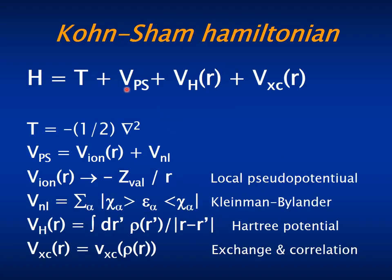In the pseudo-potential approximation used by SIESTA, the total Hamiltonian is composed by the Laplacian operator T, the pseudo-potential which describes the interaction with the nuclei and the core electrons, the Hartree electrostatic potential produced by the valence electrons only, and the exchange and correlation potential that depends on the valence electron density also.